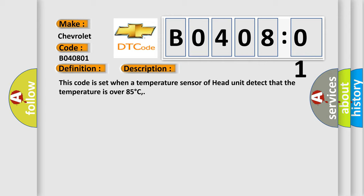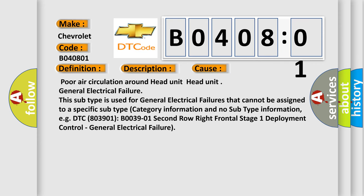This diagnostic error occurs most often in these cases: poor air circulation around head unit, and head unit general electrical failure. This subtype is used for general electrical failures that cannot be assigned to a specific subtype category. Information and no subtype information. For example, DTC B003901: second row right frontal stage 1 deployment control, general electrical failure.